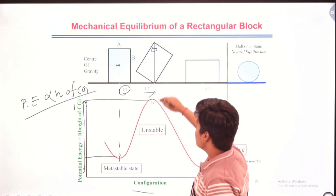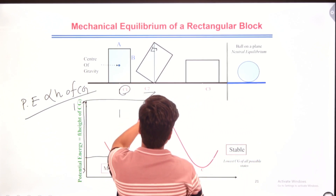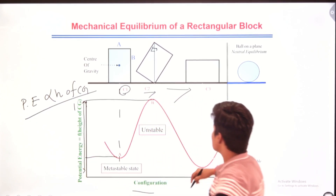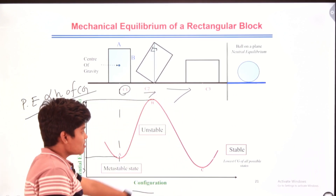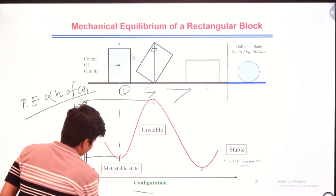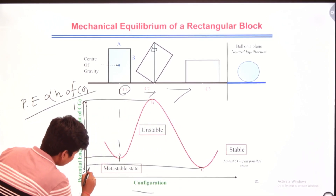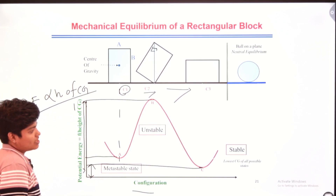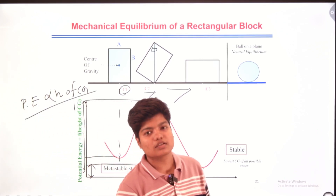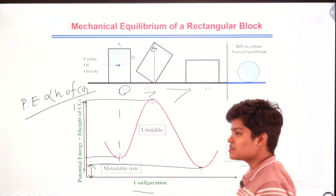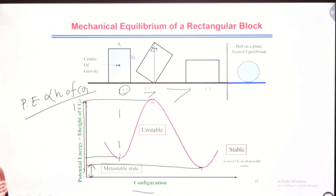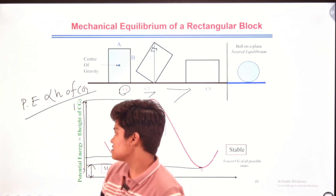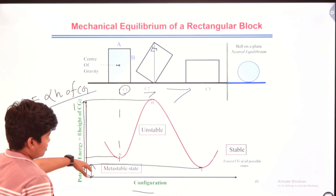After tilting from C2 to C3, the box reaches the most stable position. In C3, the center of gravity is lowest among all three configurations, so the potential energy is at its minimum. Less potential energy means higher stability. We can see in the graph how stability changes according to the height of the center of gravity.